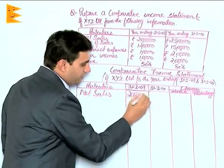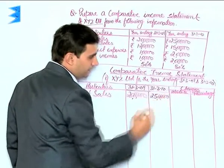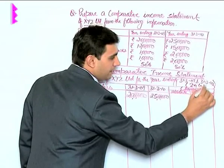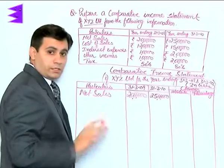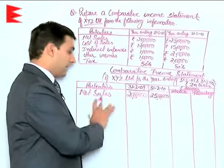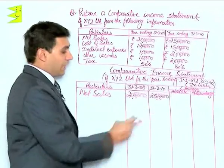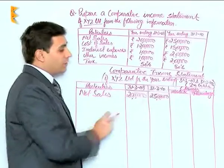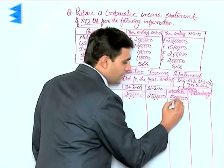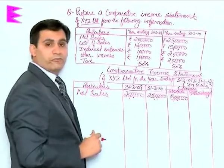The previous year figure for net sales is rupees 20 lakhs and the current year figure is 25 lakhs. Note that these figures are in lakhs. The absolute change represents the change in net sales for the two accounting periods. Since current year sales are 25 lakhs and previous year were 20 lakhs, the absolute change is 25 minus 20, which is 5 lakhs — meaning sales have increased by 5 lakhs.